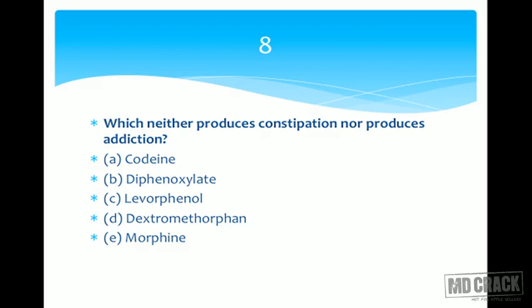Levorphanol is a narcotic analgesic used in selected cases with malignancies, in the terminal stages of cancer to relieve pain — again a typical narcotic analgesic. We are left with dextromethorphan. This drug is used in the management of cough as a cough suppressant.